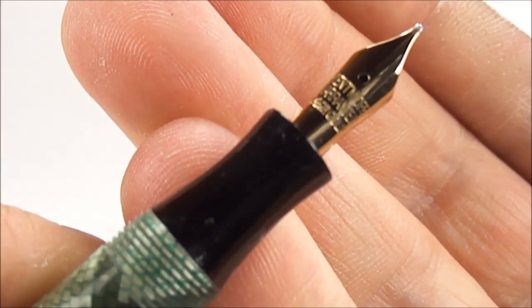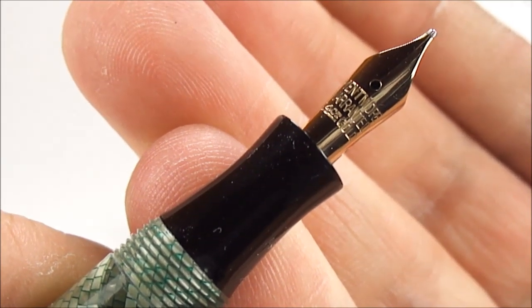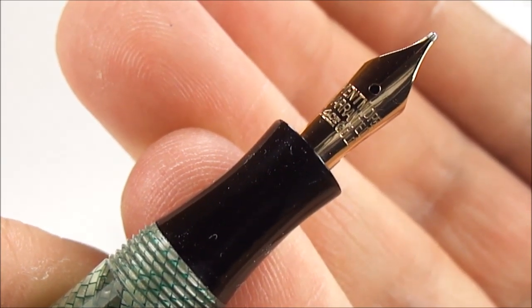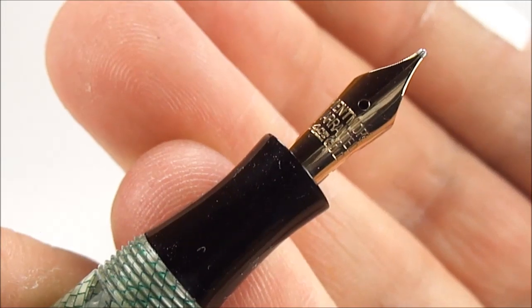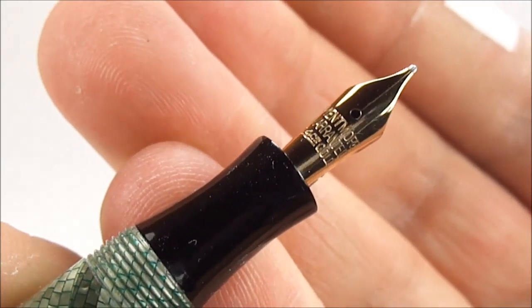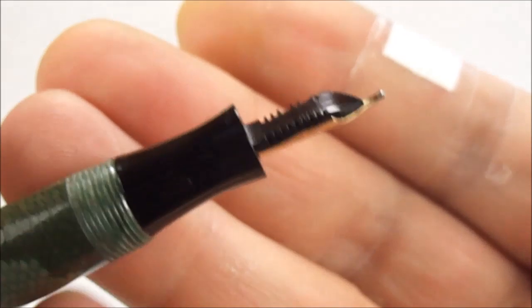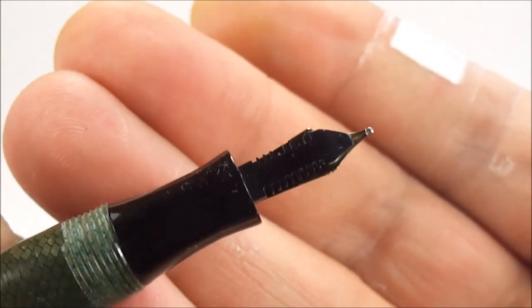And if we show you the nib, keep it nice and still for you. What we have there is a Mentmore warranted 14 karat gold nib. If we turn it over for you, you can see it's got the finned or the comb feed underneath there.